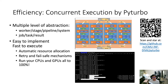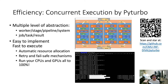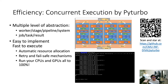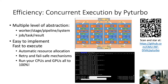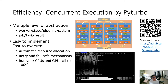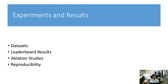Efficiency is an important concern as we are dealing with real-time activity recognition. We introduce the concurrent execution framework PyTurbo. It involves multiple levels of abstraction including worker, stage, pipeline system, and also job, task, and results to help you develop efficient activity detection systems. It's easy to implement and fast to execute, handles automatic resource allocation, retry and fail-safe mechanisms, and can run your CPUs and GPUs all at 100%. Our system is built upon it to maximize utilization of computation power.